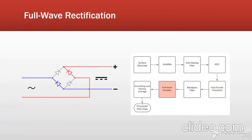Next, we have to do full wave rectification on our signal, as processed EMG data is only represented in positive amplitudes. In hardware, this could be done using a bridge rectifier, but since we are working in software, it is easier to just take the absolute value of the negative components of our signal and add it to the positive components.